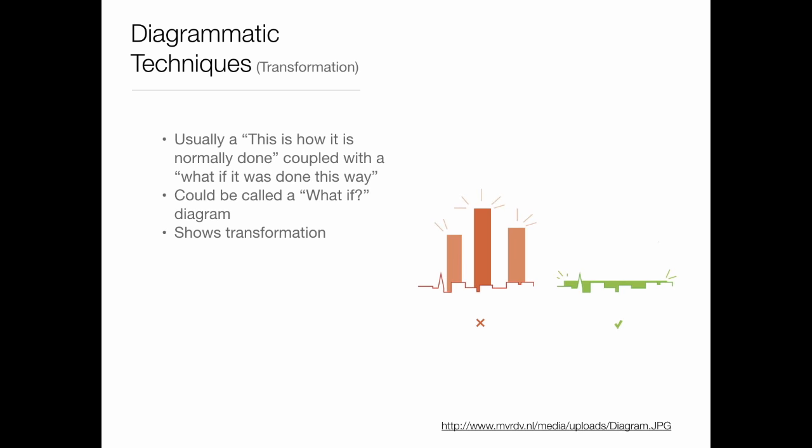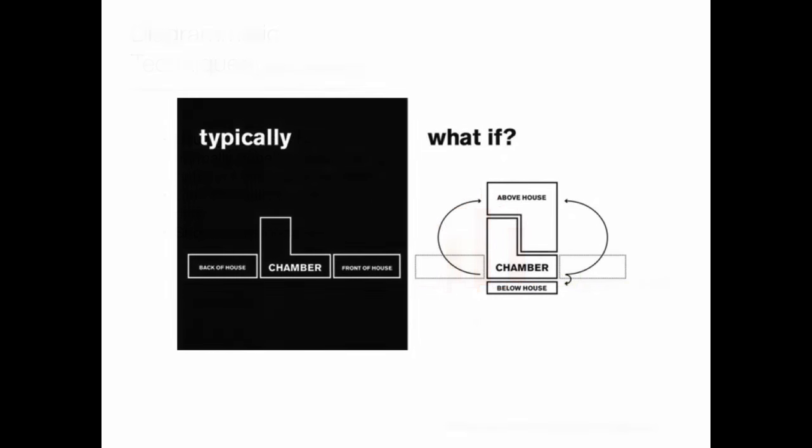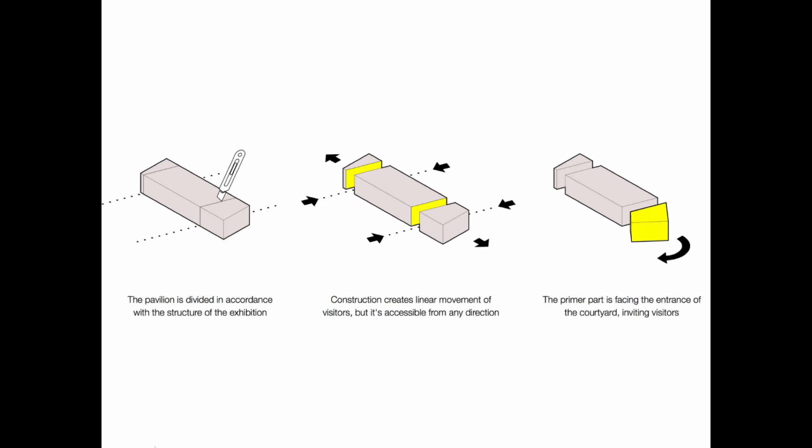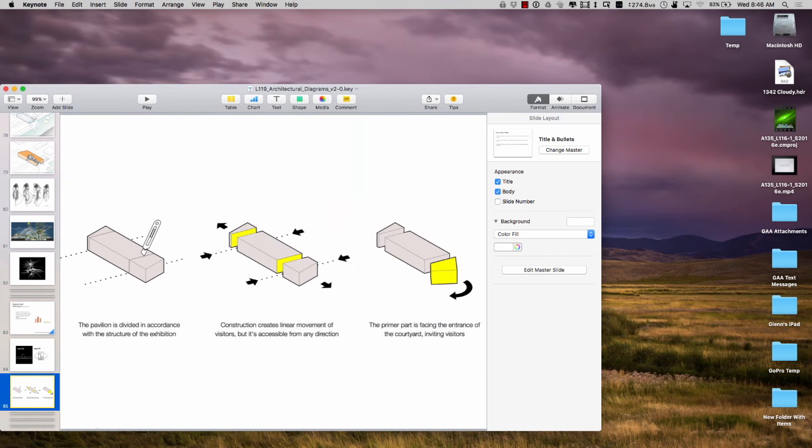Sometimes it has to do with sun, wind, and rain. The last category is transformation — essentially showing: this is how it's normally done, what if we did it this way? So, normally it's the city skyline with big tall buildings — what if we turn the building on its side? Or typically it's back-of-house, chamber, front-of-house — what if it were above, chamber, and below? Or: take this void, slice it up, then take one of the pieces and flip it around. It's the 'what if.'